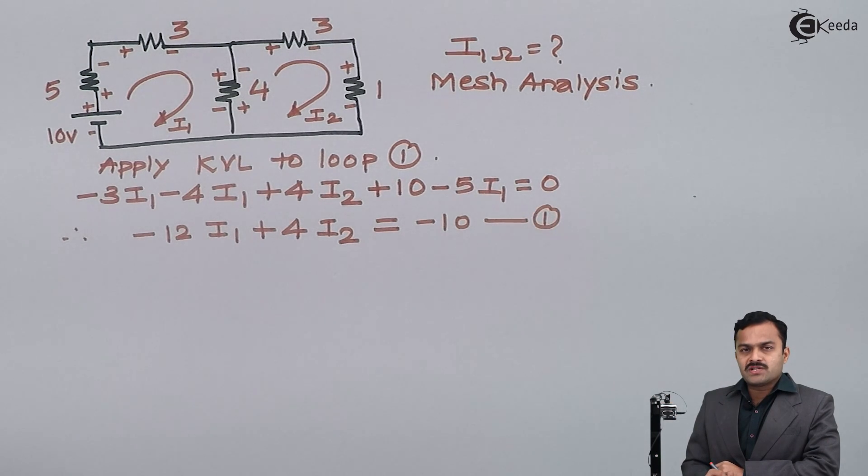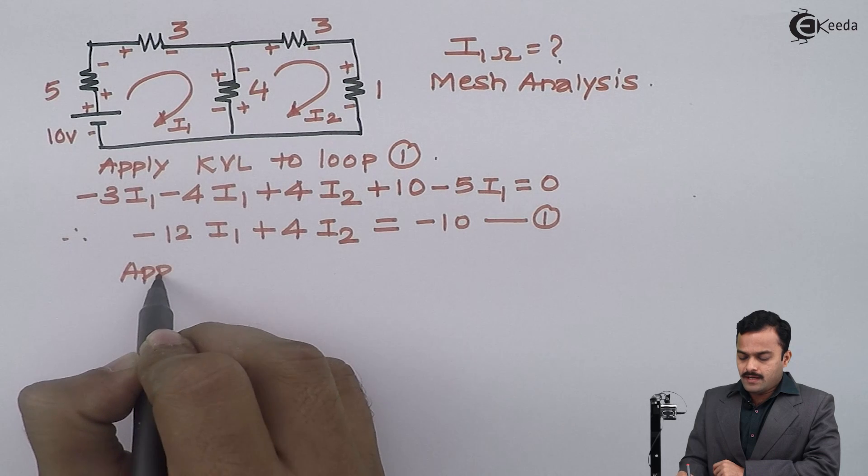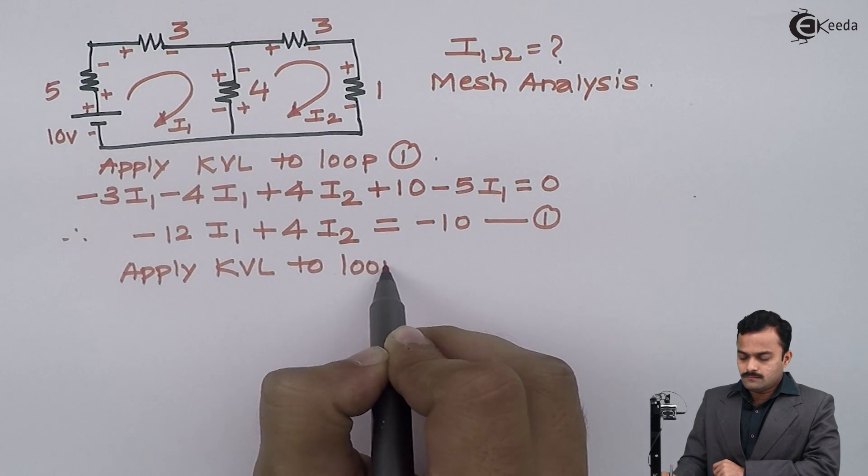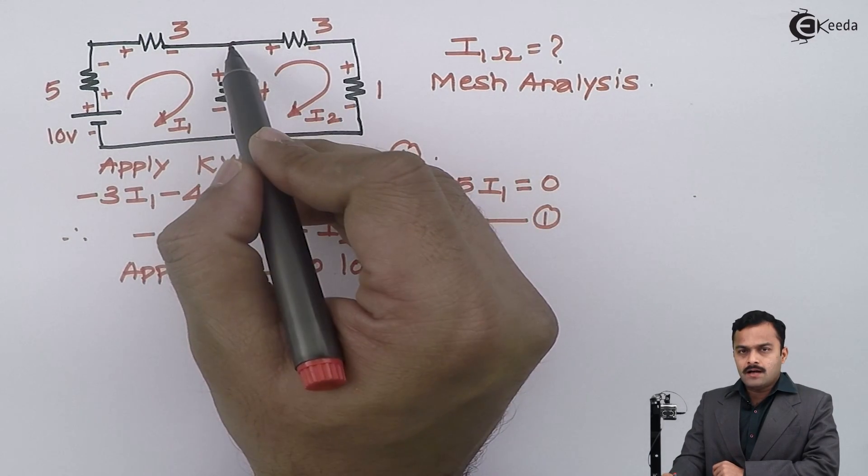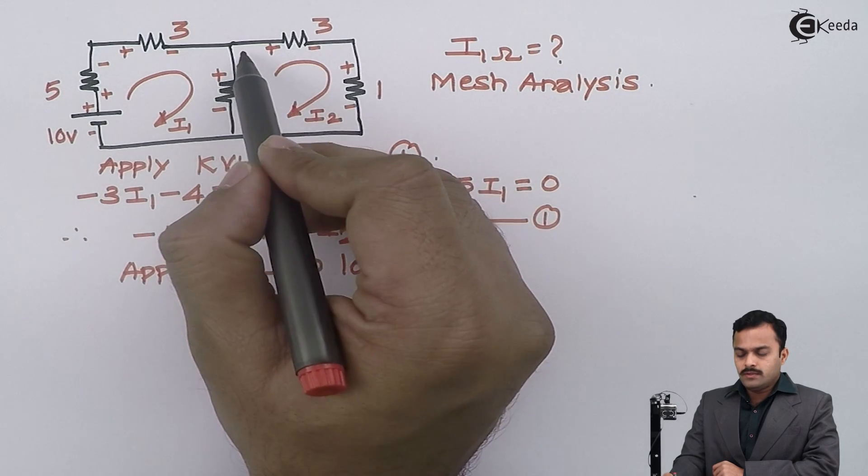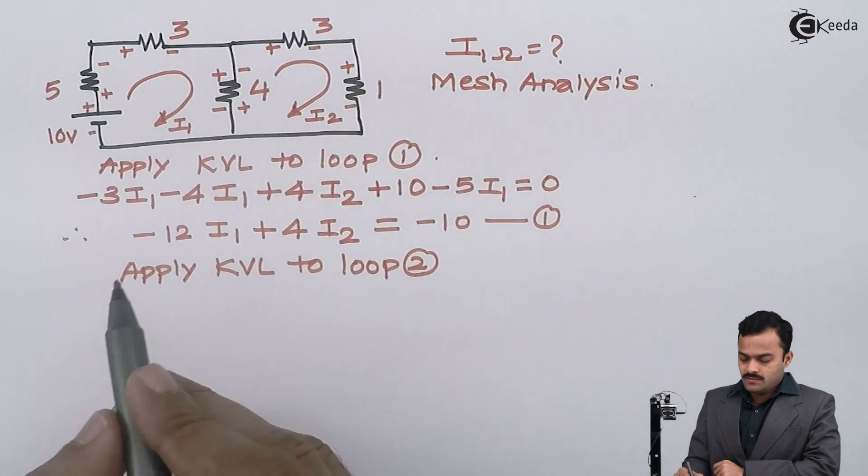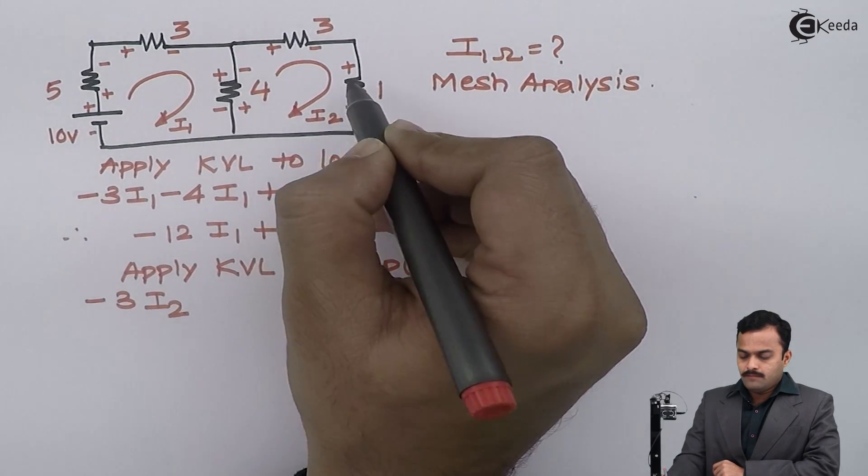Similarly I will apply KVL to loop 2. I will start from this point and will come back to the same point after tracing this path. So in this path in a direction of current this is a voltage drop so it's a minus 3 I2, plus minus minus 1 I2 so I will mention just minus I2.